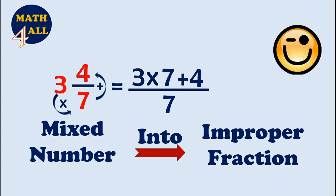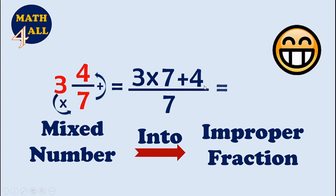I think it's easy! Twenty-one plus four equals twenty-five. So the answer is twenty-five sevenths, or twenty-five over seven. And this was our lesson — thank you!